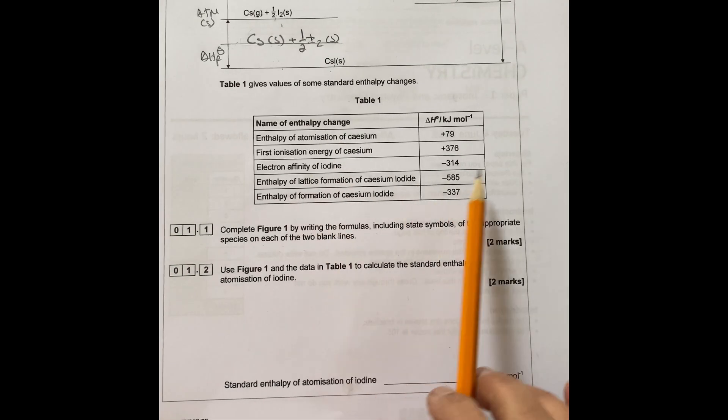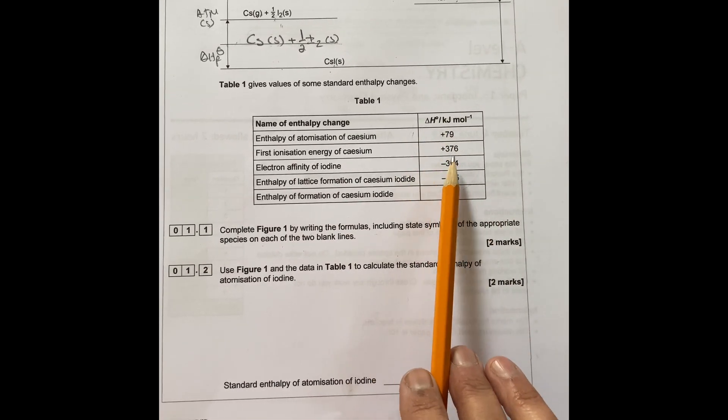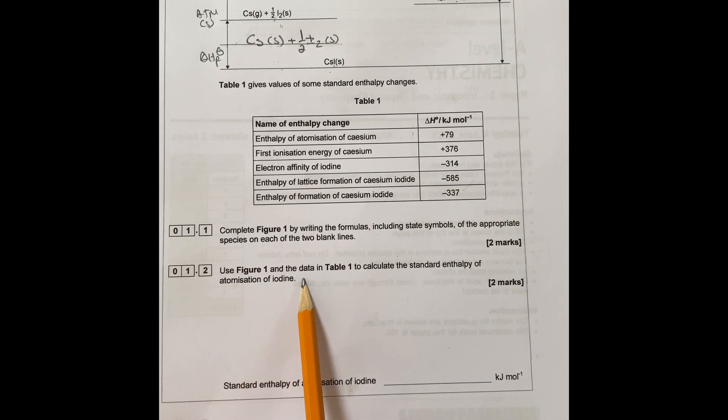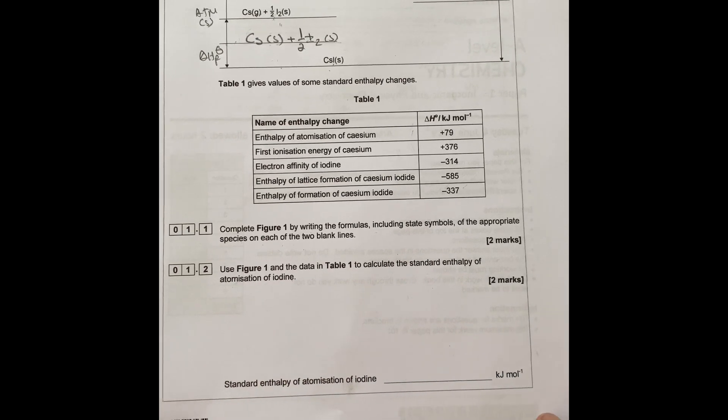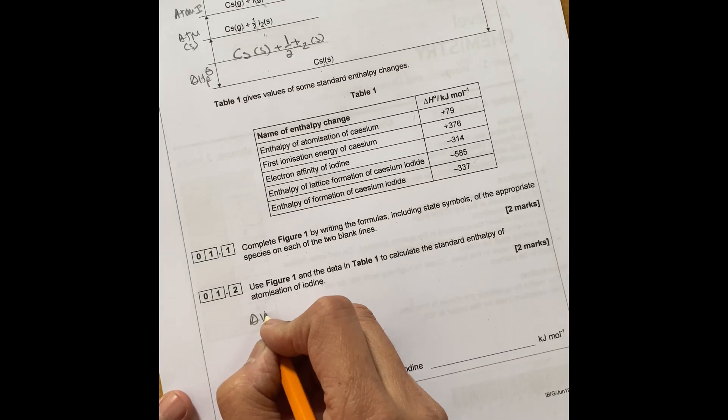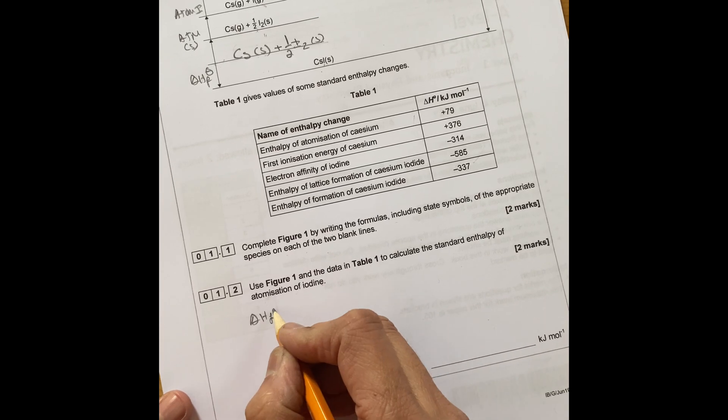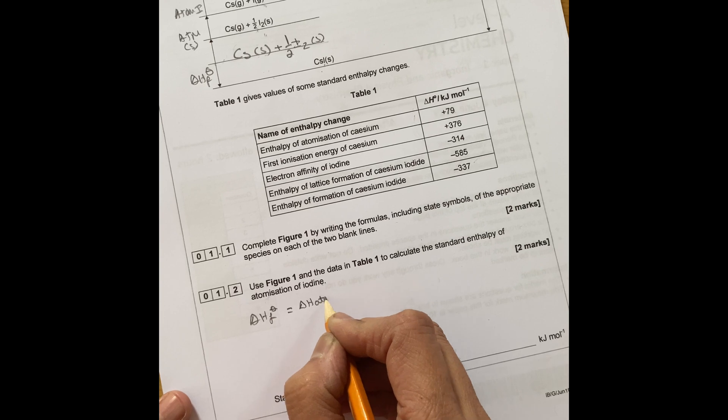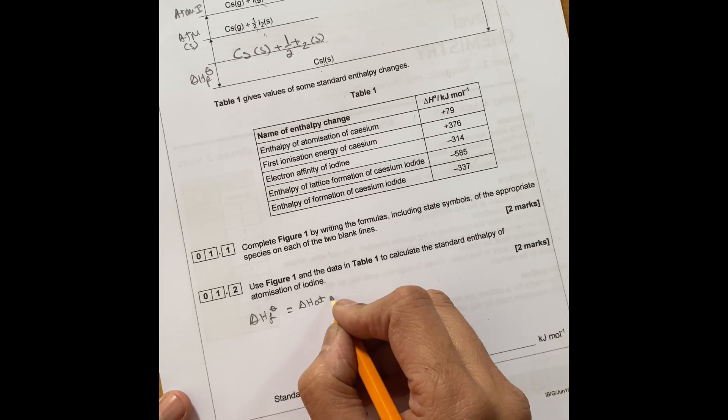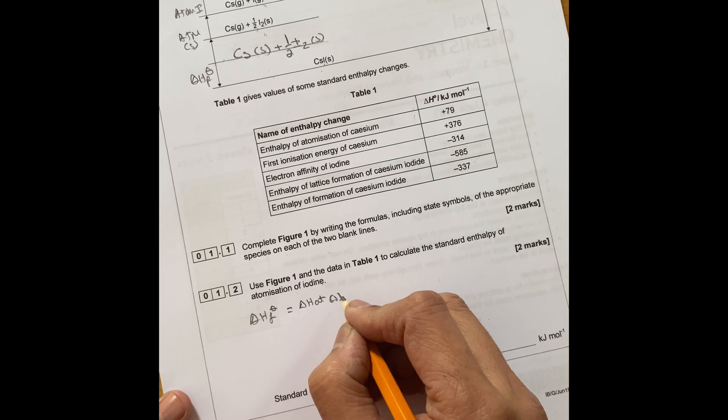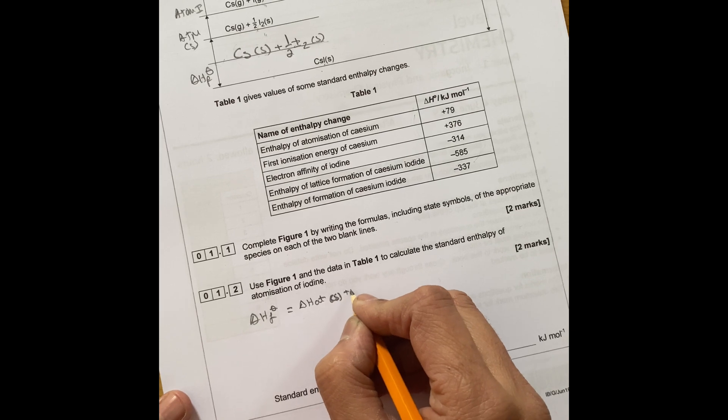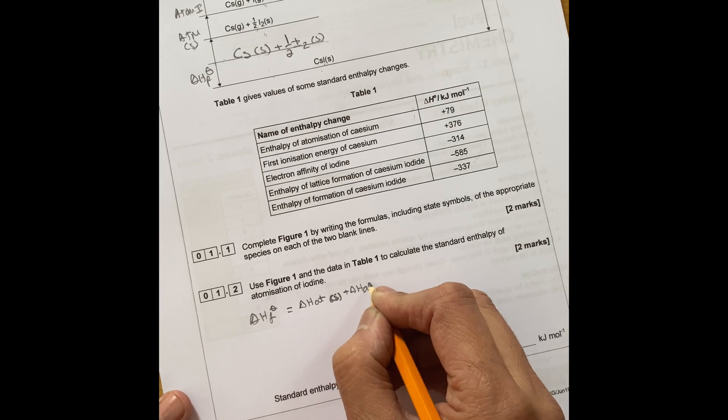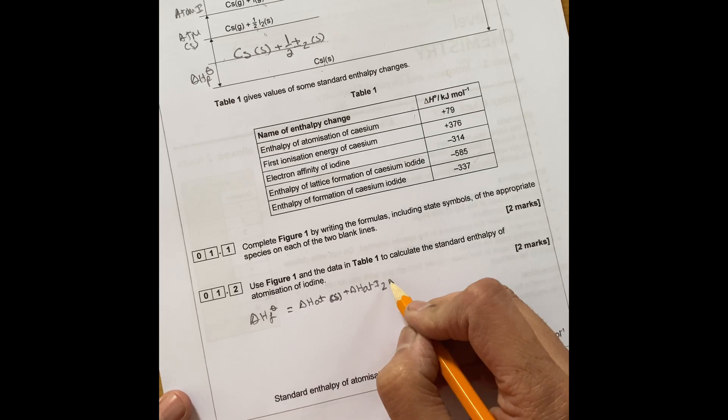That's the first thing you're going to do. But you have to learn every single equation for each of the definitions. What you're going to do is use these values here to calculate the standard enthalpy change of atomization of iodine.